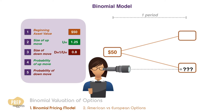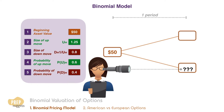She also estimated that the probability of an up move is 0.6. Since they are mutually exclusive, the probability of a down move is therefore 0.4.